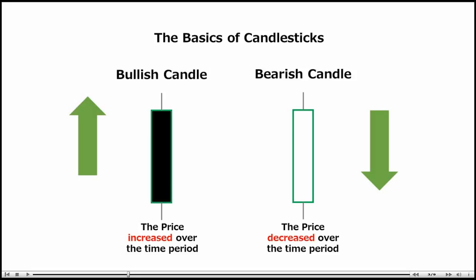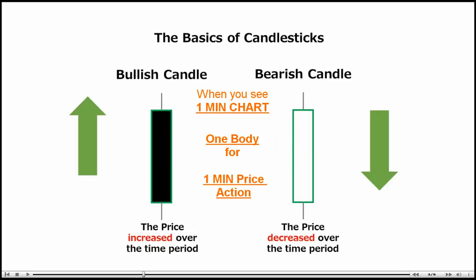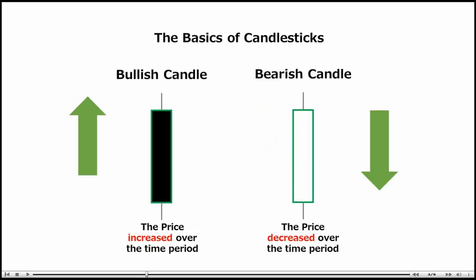Let's see the basic candlestick and what the candlestick is telling you. Black and white candlestick as you can see. The black body is called a bullish candle — its price increases over the time period. A one-minute chart shows one body for one-minute price action. You have to remember that. And the white body is called a bearish candle, which shows the price decrease over the time period.